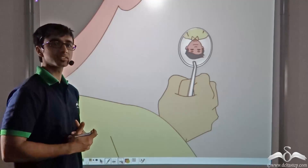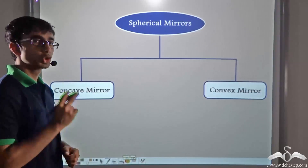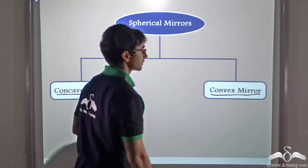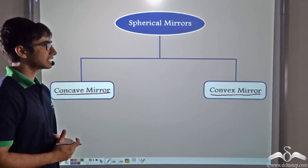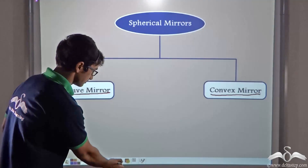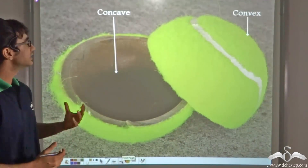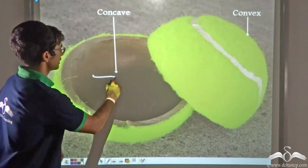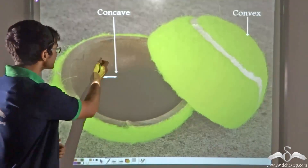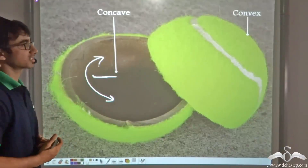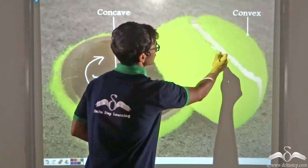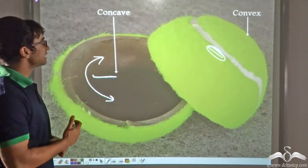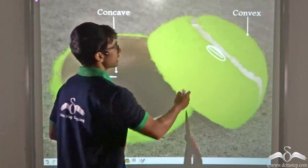So how many kinds of spherical mirrors do you think there are? There are two kinds of spherical mirrors: one, concave mirror, and another, a convex mirror. Now before we talk more about these, let us find out what concave and convex mean. Consider this picture of a tennis ball cut into two halves. The hollow part of the tennis ball refers to a concave surface. On the other hand, the outward or bulging surface of the tennis ball is the convex part. So concave means the hollow part and convex is the part which bulges outward.